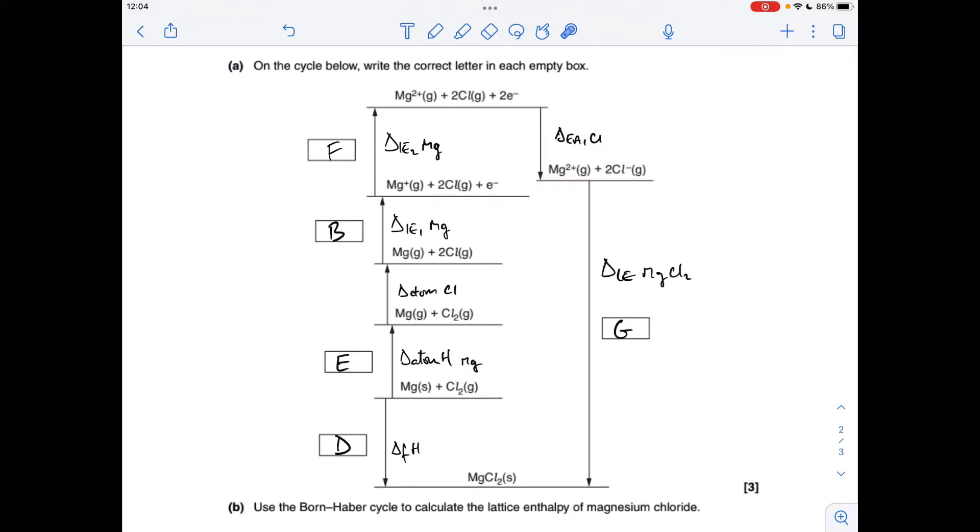Solid magnesium to gaseous magnesium, so that's the atomisation of magnesium, process E. We've got chlorine gas going to two moles of chlorine gas atoms. That's the atomisation of chlorine, but we're going to need to double that in the calculation, because we've got two moles of gaseous atoms produced.